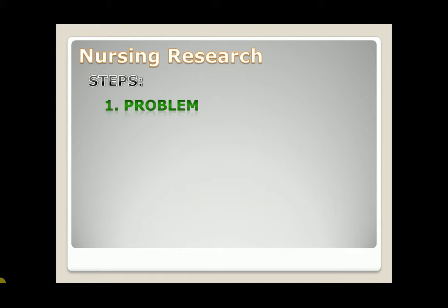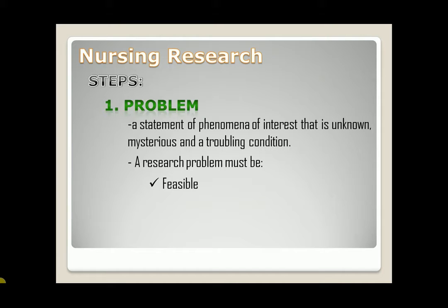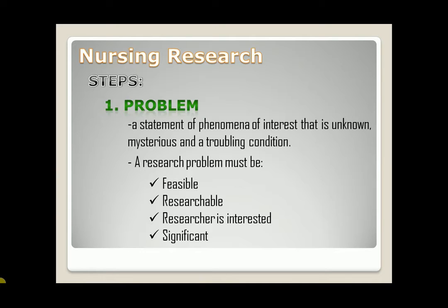Step number one: problem. A research problem is a statement of phenomena of interest that is unknown, mysterious, and a troubling condition. A research problem must be feasible, which means the researcher should consider about the time, money, resources, and ethics of the study. Second, it must be researchable. Third, the researcher is interested about the study. And lastly, it must be significant.